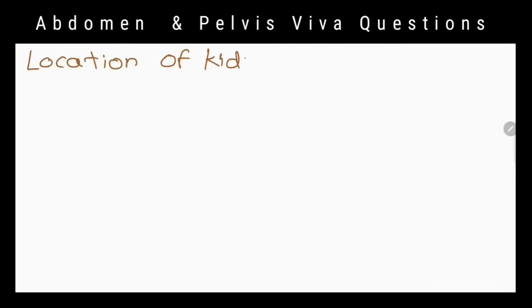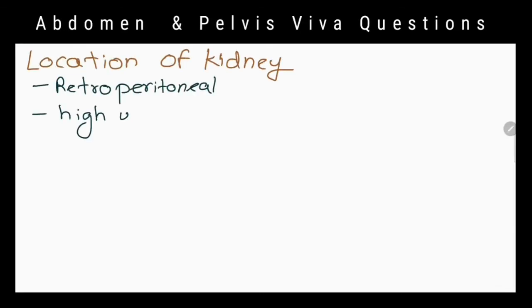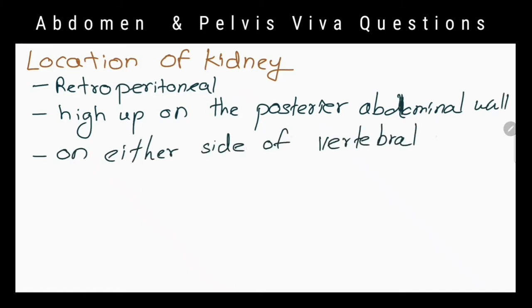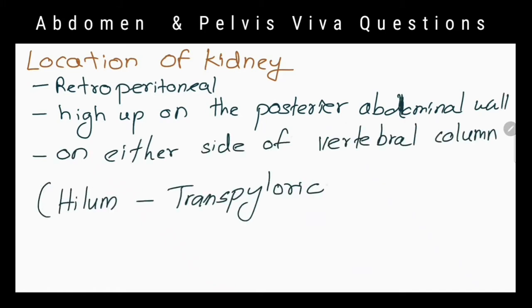Where is the kidney located? Retroperitoneally, high up on the posterior abdominal wall on either side of the vertebral column.